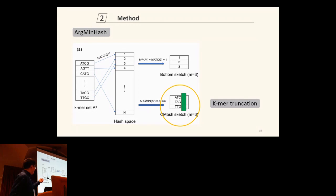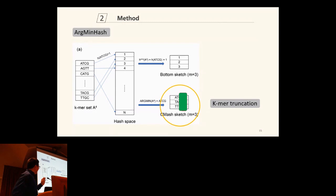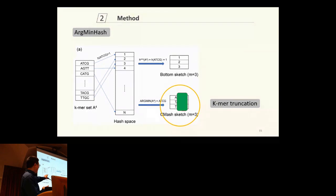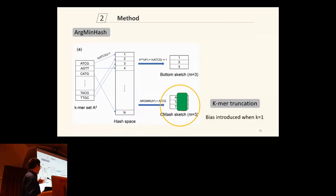Storing k-mer elements enables k-mer truncation in downstream analysis. For example, if we do a prefix lookup to depth three, we get a 3-mer sketch instead of a 4-mer sketch. If we truncate further to depth two, we get a 2-mer sketch. We can go all the way to a 1-mer sketch. However, there is an issue: truncating from 4-mer to 1-mer may produce duplicate entries — for instance, two letter T's as the 1-mer set — which introduces a bias. This bias is introduced whenever truncation creates unbalanced prefixes.